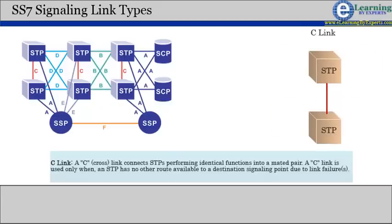C link, A C or cross link, connects STPs performing identical functions into a mated pair.